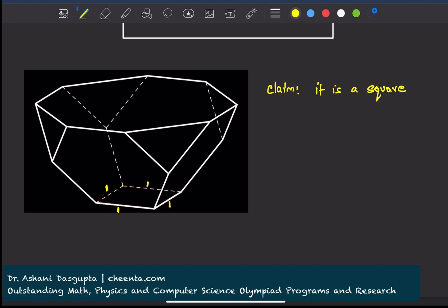Now, let's join the diagonals of this rhombus. We know the diagonals of a rhombus intersect at 90 degrees. This is 90 degrees.